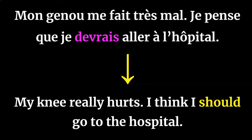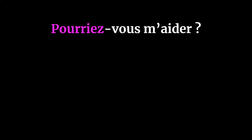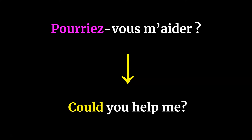We use the verb devoir in le conditionnel présent to say 'should' in French. Next example: pourriez-vous m'aider? — which is a polite way of asking for help, translating to 'could you help me?' We use the verb pouvoir in le conditionnel présent to say 'could' in French.